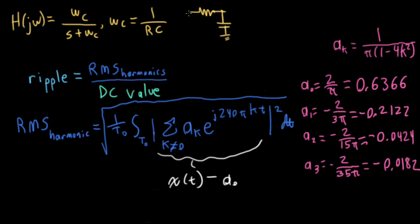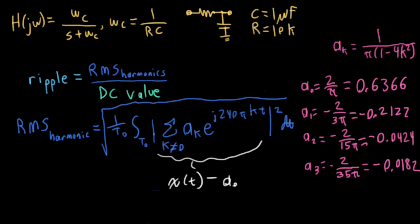So we have an input coming in here, we're tapping an output here, and I have my R and my C. Now, in the example we're about to do, we need to pick some values for R and C. So how about for C, let's pick 1 microfarad, and for R, let's pick 10 kiloohm. These two together will give me an ω_c of 100 radians per second.